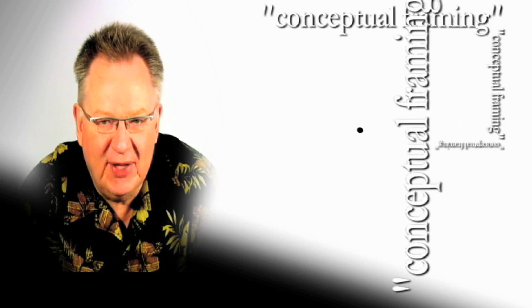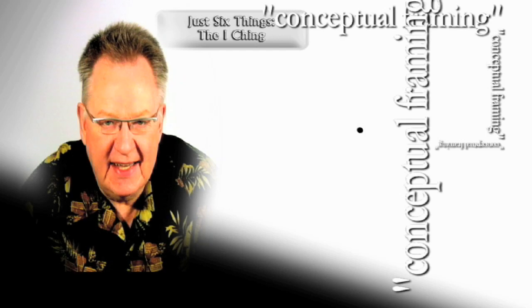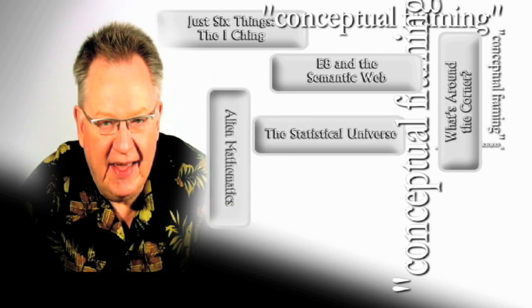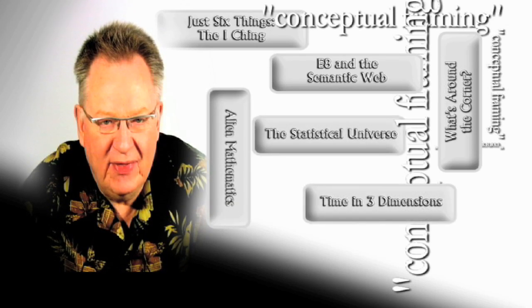Now here are six other past blogs where I've talked about the Just Six Things concept and the importance of the number six. Just Six Things, the I Ching. E8 and the Semantic Web. What's Around the Corner. The Statistical Universe. Alien Mathematics. And Time in Three Dimensions.